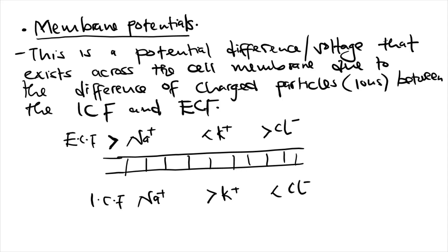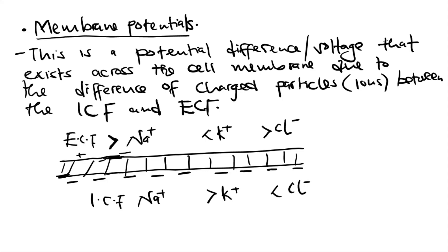The difference in concentrations of these charged particles between the ICF and ECF creates a potential difference across the cell membrane. The inner part of the cell membrane is negatively charged, and the outer part is positively charged.